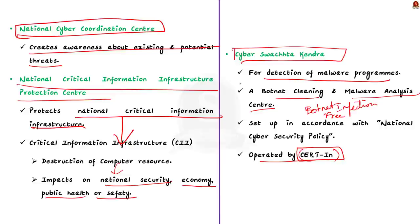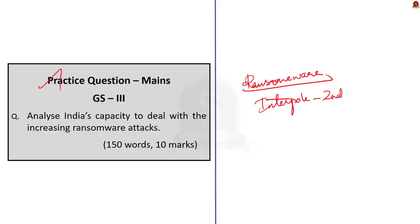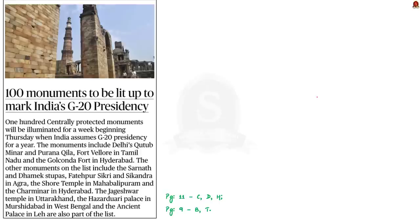These are some of the agencies in India dealing with cyber attacks. Since our country is moving towards digitalization, knowing about ransomware and the ways to prevent it is very important. It is also very important to build infrastructure not prone to malicious software like ransomware. In this discussion, we saw about ransomware, its seriousness, and Interpol's ranking of it as the second highest threat. We also saw agencies dealing with cyber attacks in India.